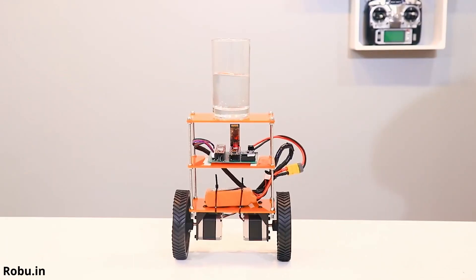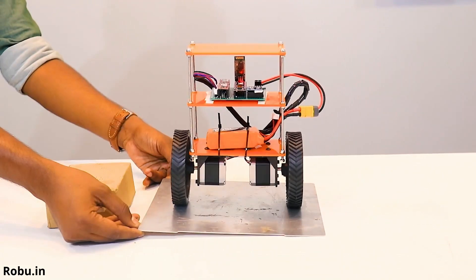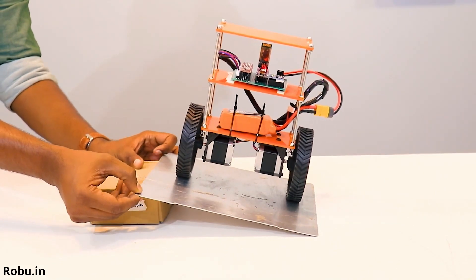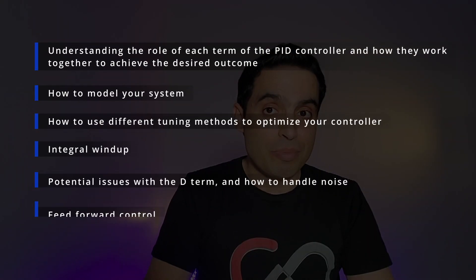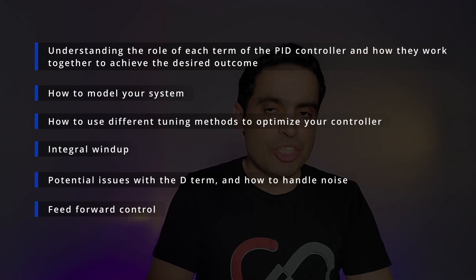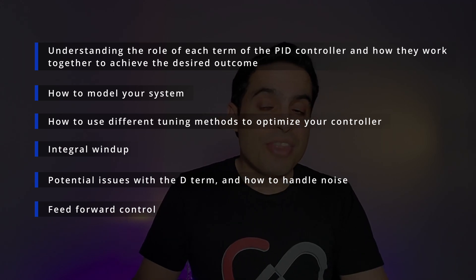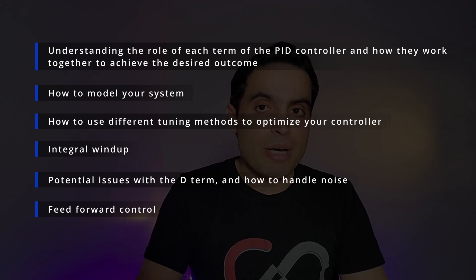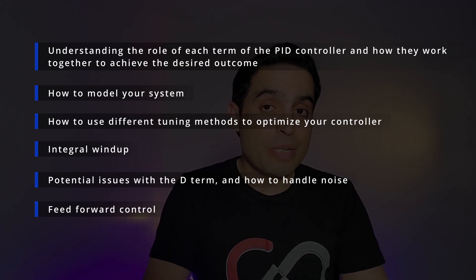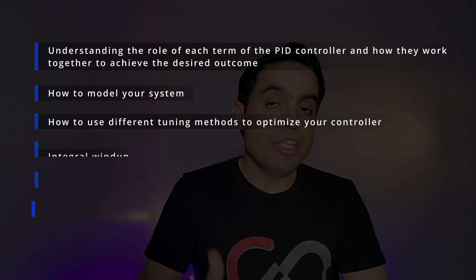The best way to learn PID control is through hands-on experience, so why not try to build a self-balancing robot? As you work on your PID learning journey, here are the key concepts you'll want to focus on: understanding the role of each term of the PID controller and how they work together to achieve the desired outcome; how to model your system; how to use different tuning methods to optimize your controller; integral wind-up; potential issues with the D term and how to handle noise; and finally, feedforward control.